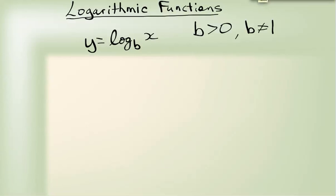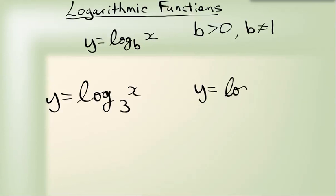Our last type of function we're going to talk about in this video are logarithmic functions. That's where y equals log b of x. Now b is any positive number that does not equal one. So this graph can look like y equals log three of x, or it can look like y equals log one third of x. That b number can be any number of things.